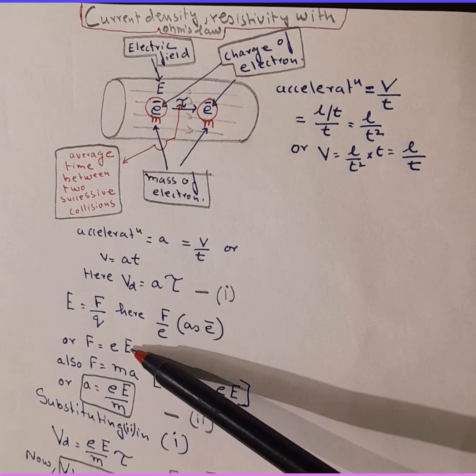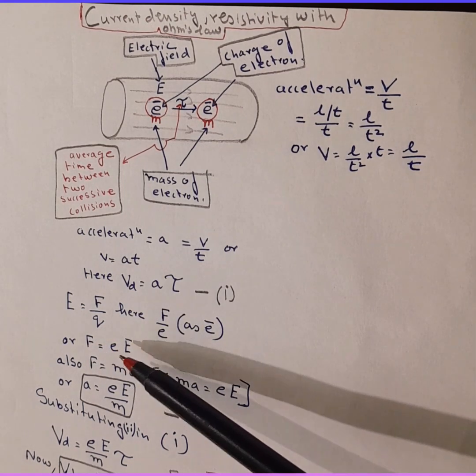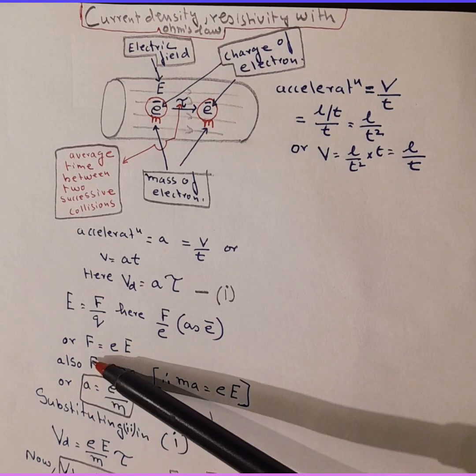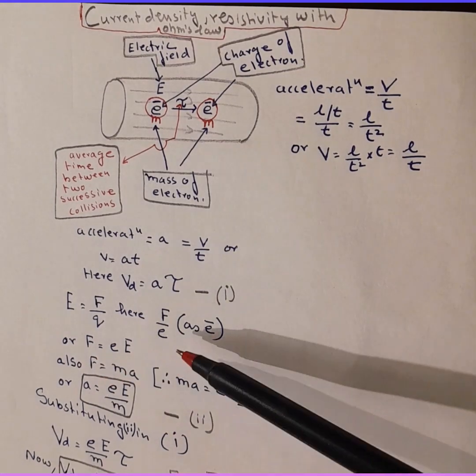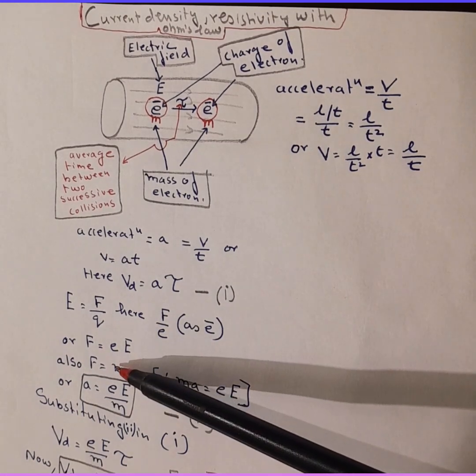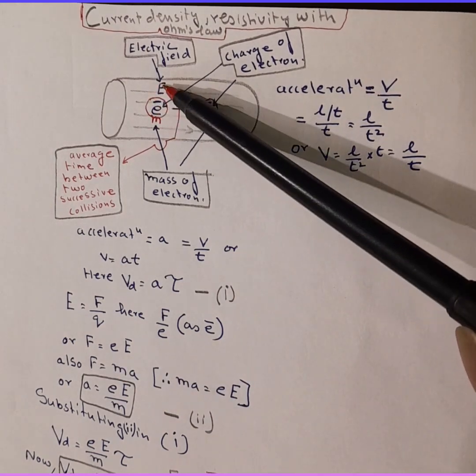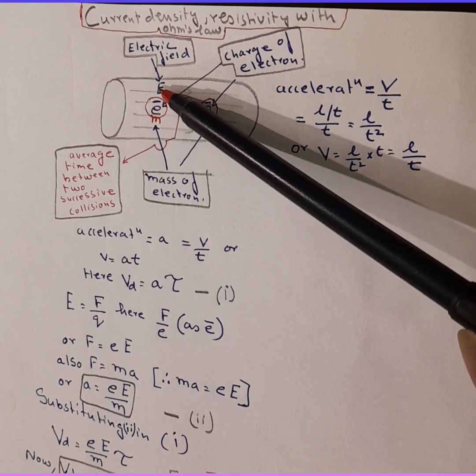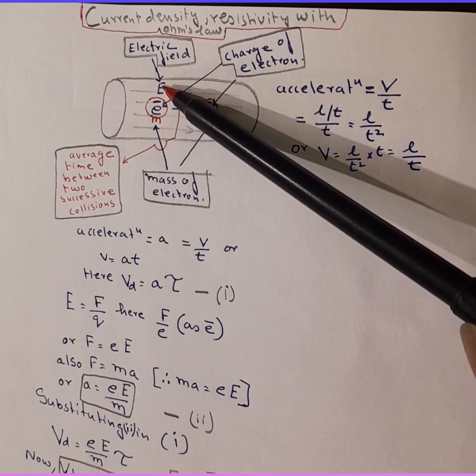F is equal to charge of electron multiplied by electric field intensity, capital E. We also know mechanical force is equal to mass into acceleration. And we also know that if the charge is moving in electric field intensity E, then the force that it would experience is e into capital E.